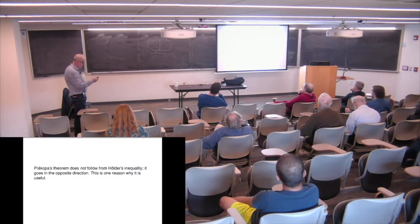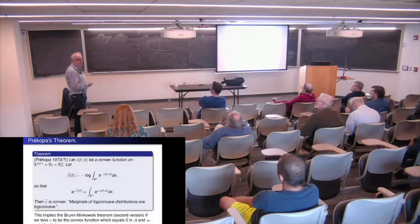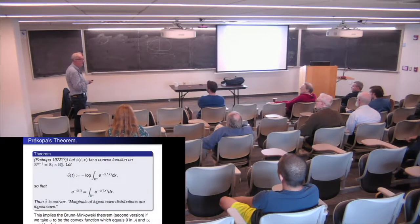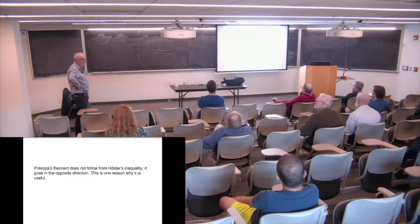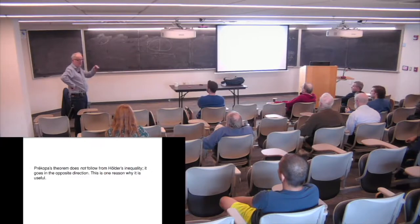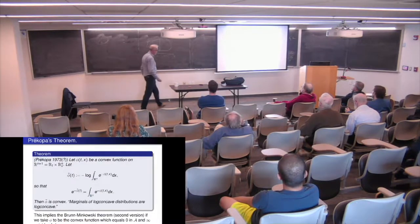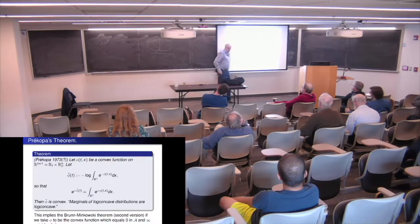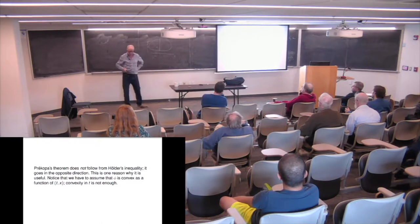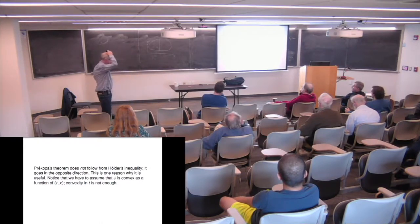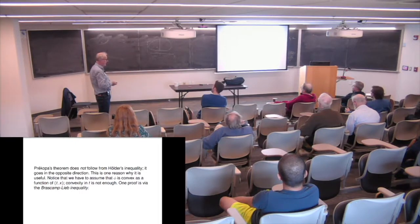One important thing: when you first look at the theorem, you might say this should follow from Hölder's inequality — just apply convexity with respect to T. But no, that's not the case. If you try Hölder's inequality, you get a similar inequality that goes in the opposite direction. The point of this theorem is that you have the minus signs. For this, you really need to know that phi is convex with respect to all variables, not just T.